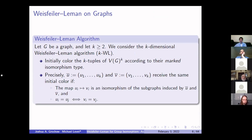Let's look at how the Weisfeiler-Lehman algorithm works for graphs. For graph G and an integer k at least 2, the k-dimensional WL algorithm first initially colors the k-tuples of vertices according to their marked isomorphism type. Two k-tuples u and v receive the same initial color if they induce an isomorphic subgraph — specifically, if the map sending u_i to v_i extends to an isomorphism of the induced subgraphs. If yes, u and v receive the same color; if no, they receive different initial colors.